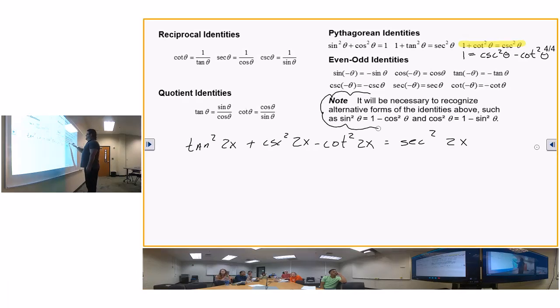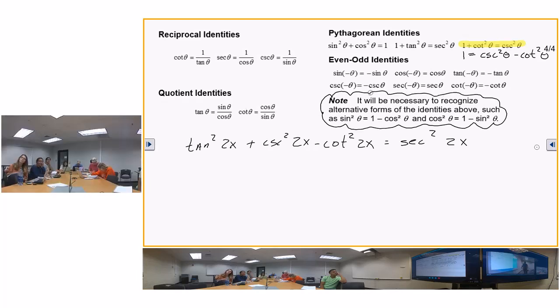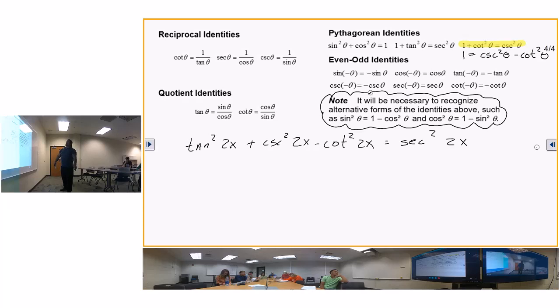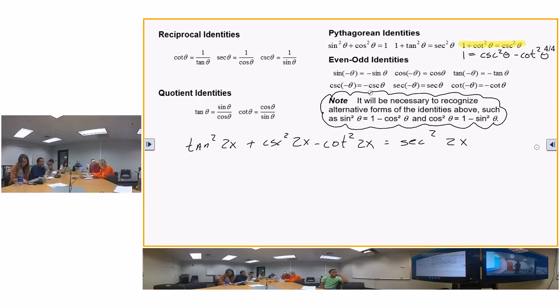Does anybody see a Pythagorean identity in there? I don't see one, but if you solved the last one for 1, what would you get? Cosecant squared minus what? Right here people, for those who pay attention, this one right here, solve it to equal 1. So 1 is equal to cosecant squared theta minus cotangent squared theta. Remember what this says. It will be necessary for you to think.